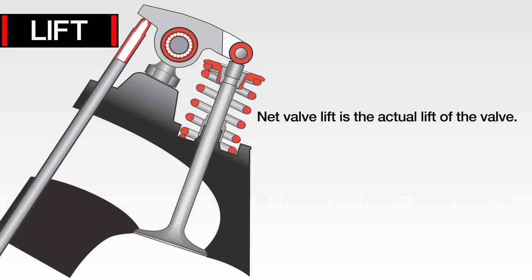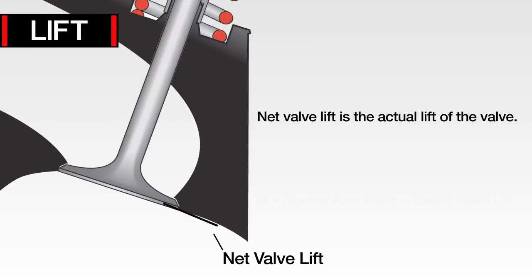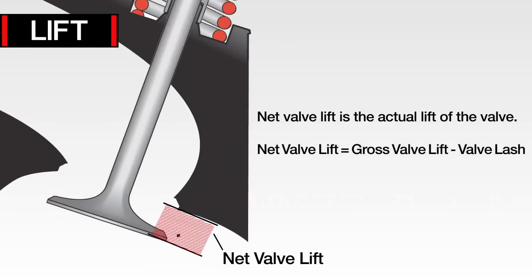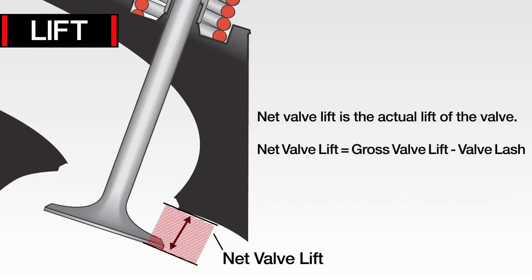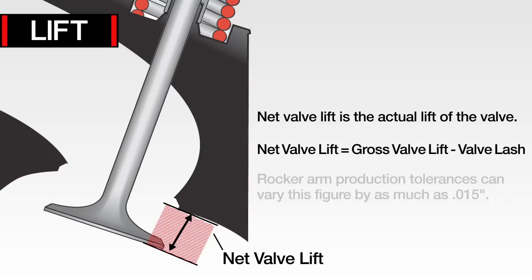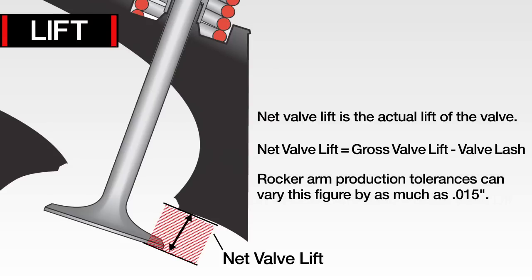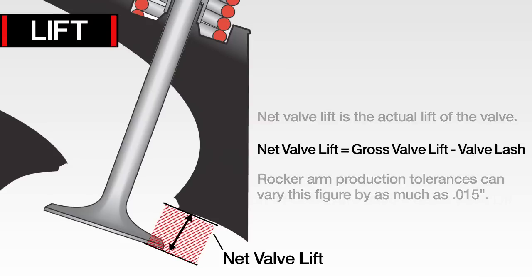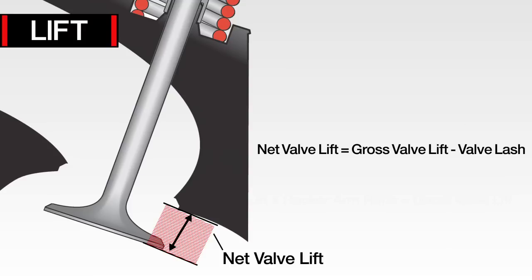Net valve lift is the actual lift of the valve. This lift can be determined by subtracting the valve lash dimension from the gross valve lift figure. Rocker arm production tolerances can vary this figure by as much as 15 thousandths. The formula for net valve lift is: gross valve lift minus valve lash.